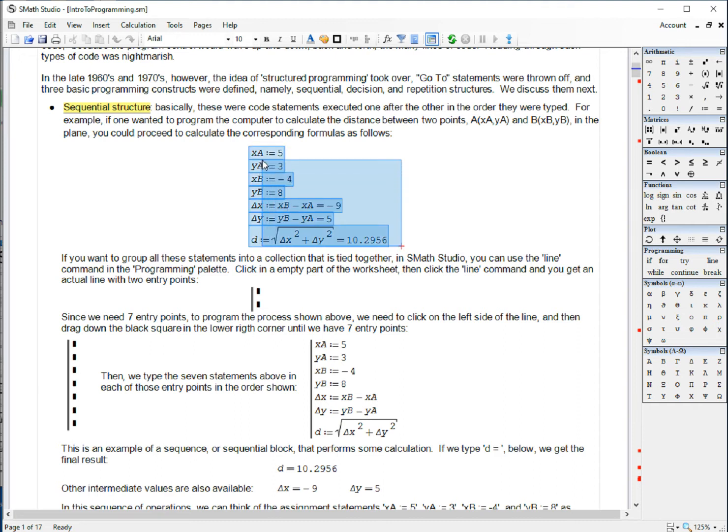And so the sequential structures are the structure of simple programs. If we want to enclose all these lines into a single block, we can use the line command in Smash Studio. This command is available in the programming palette right here. You can click somewhere, click on the line, and you immediately get provided with a line with two entry points.